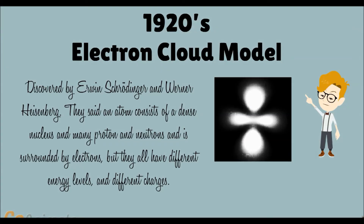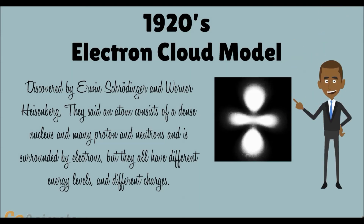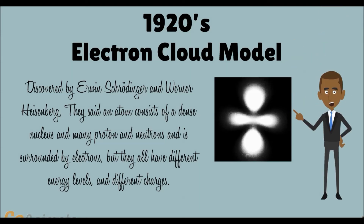The Bohr model is an electron cloud model, discovered by Erwin Schrödinger and Werner Heisenberg. They said an atom consists of a dense nucleus with many protons and neutrons, surrounded by electrons, but they all have different energy levels and different charges.